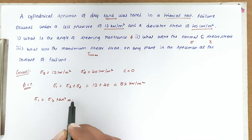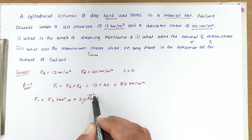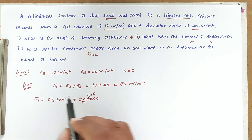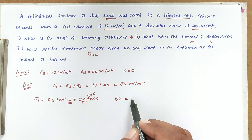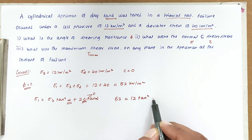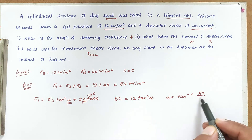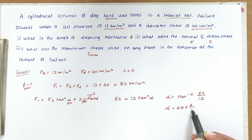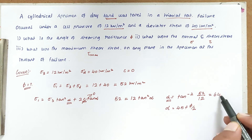Using the formula σ1 = σ3·tan²α + 2C·tanα, since C = 0 the second term vanishes. Substituting: 52 = 12·tan²α, so tan²α = 52/12, giving α = 64°20'.